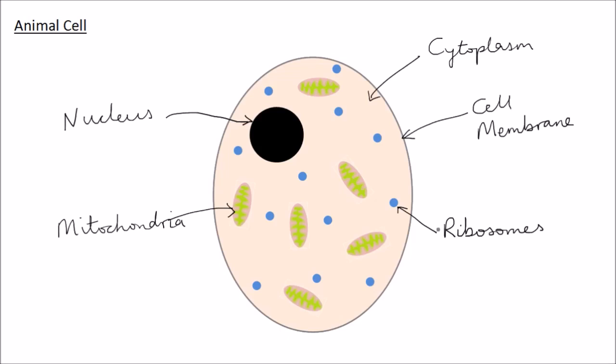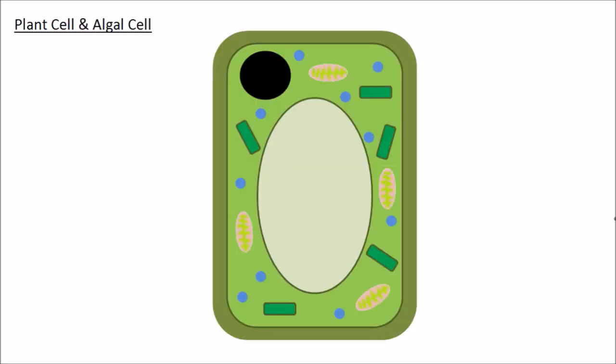So that covers animal cells in general. Now we come to plant cells and algae. They have all the components of an animal cell plus a few others.